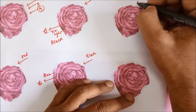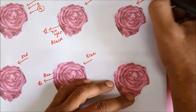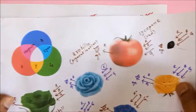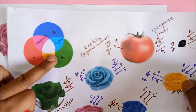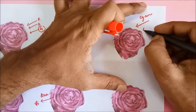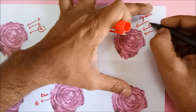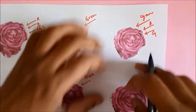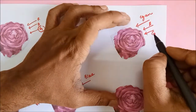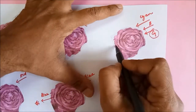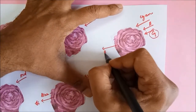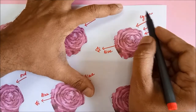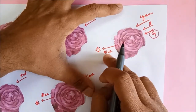If we use cyan light on it, cyan light is made up of blue and green. So blue and green are falling together. The green is going to get absorbed, but blue does not get absorbed, so blue finally reaches our eye. In cyan light, we see this rose as blue.